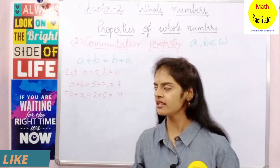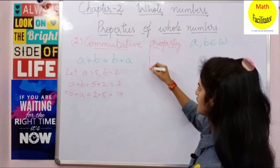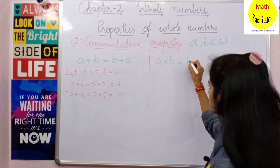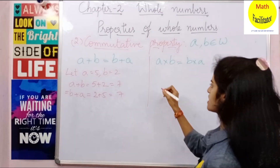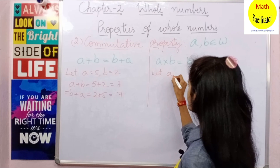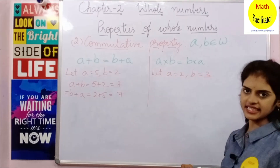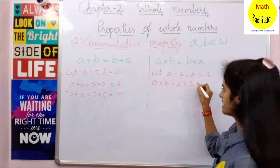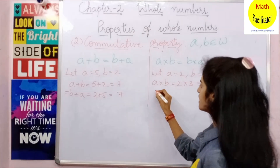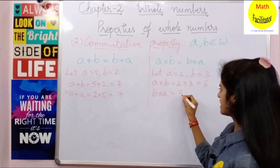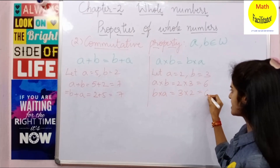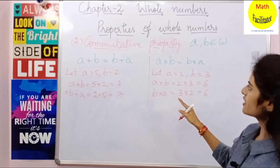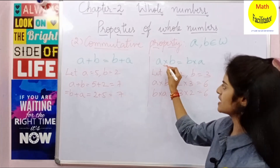Let us check for multiplication. Under multiplication, A into B is equal to B into A. Let A equal to 2 and B equal to 3. A into B is 2 into 3, which is 6. B into A is 3 into 2, which is also 6. So A into B equals B into A — commutative property is satisfied under multiplication.